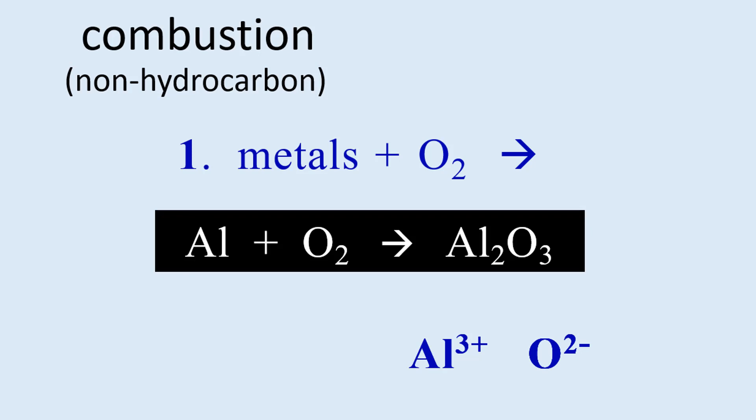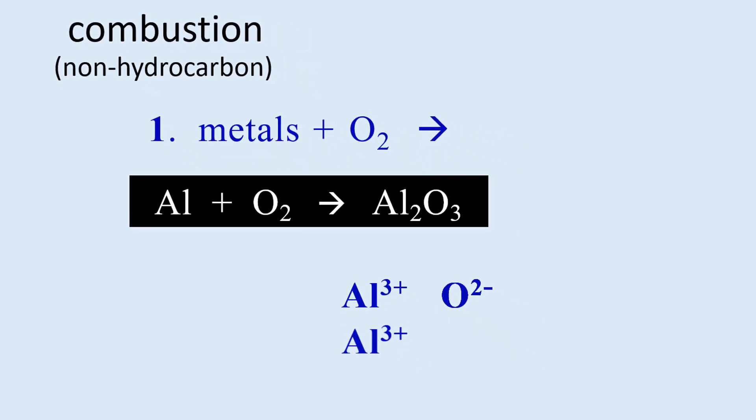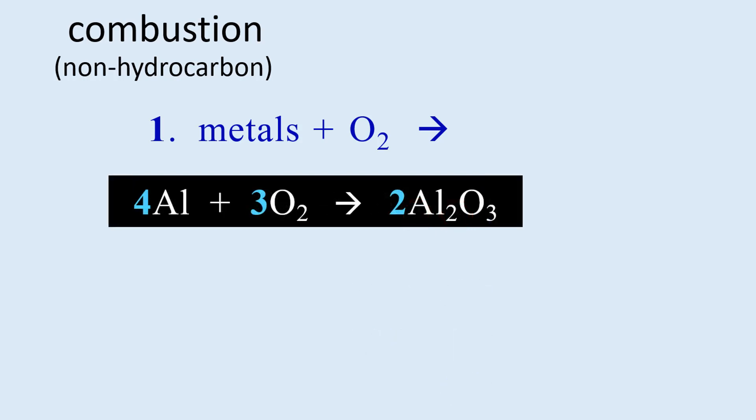We need to write subscripts that will balance the charges, and two aluminum ions will balance the charge of three oxygen ions, and so the subscripts are two and three. Once the correct product formula is determined, the equation can then be balanced.